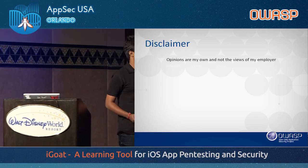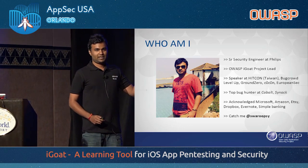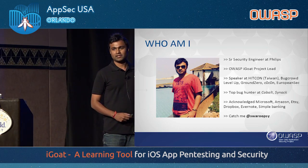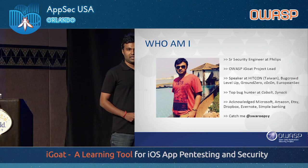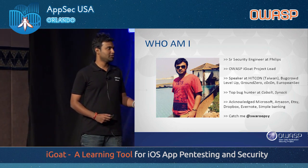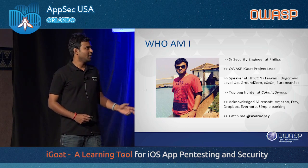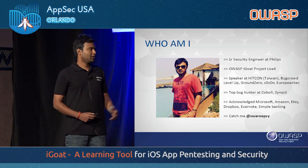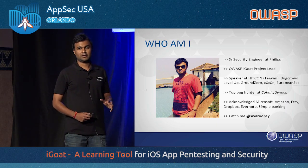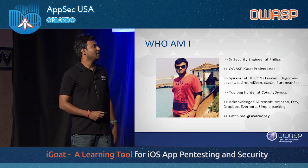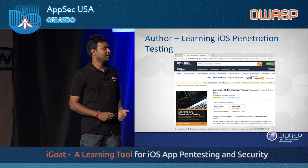All the views are my own and not of my employer. A bit about myself — we call this a shameless self-promotion slide at conferences. I work as a senior security engineer at Philips. I'm the OWASP iGOT project lead and a frequent speaker at conferences including Hacking Taiwan, Bug Crowd Level Up, Ground Zero, and recently Security at Sweden. I do bug bounties and I'm a top bug hunter at Cobalt and Cynack. I'm acknowledged by Microsoft, Amazon, and many other companies for reporting severe security issues in their mobile applications. You can catch me at Swarup, and I'm also the author of the book Learning iOS Penetration Testing.